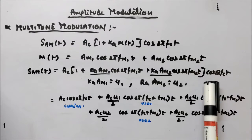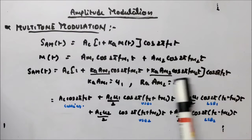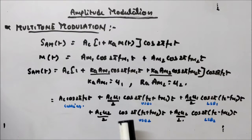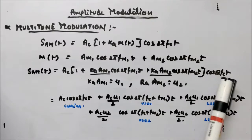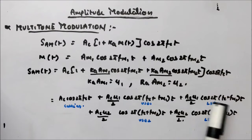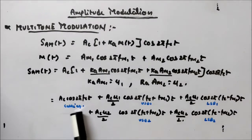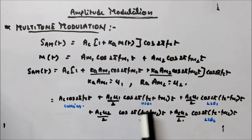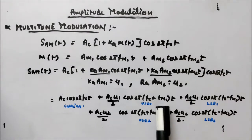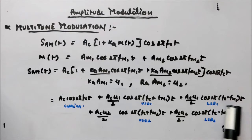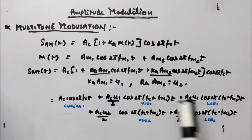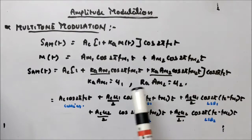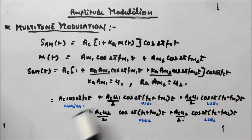Once you apply the cos A·cos B identity to the first modulation term, you get two sideband terms. Applying it to the second term gives two more sideband terms, and multiplying the cosine carrier gives the carrier term. So this term is your carrier part, this is your USB1, this is your LSB1, this is your USB2, and this is your LSB2. That is how the signal looks when you have multi-tones.